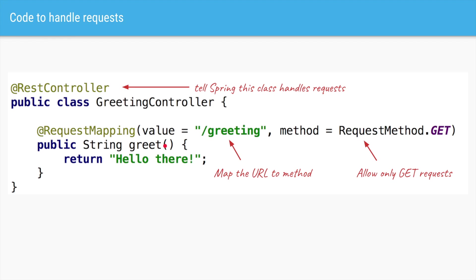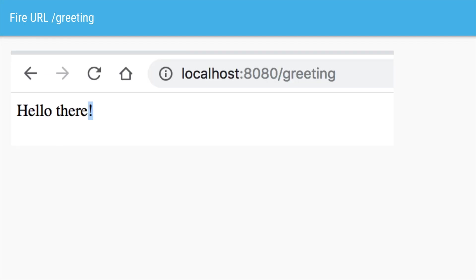Since HTTP allows us to have GET, POST, and other kinds of requests, we have to mention that this particular type of request is a GET request. This will only allow GET requests to be accepted — all other requests will be rejected. Now if we go to localhost:8080/greeting in the browser, it will reply back with "hello there".